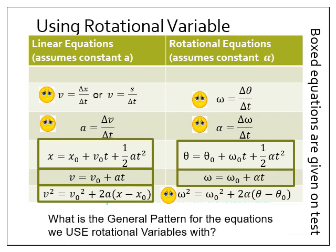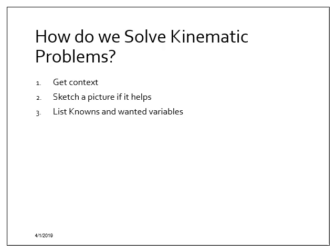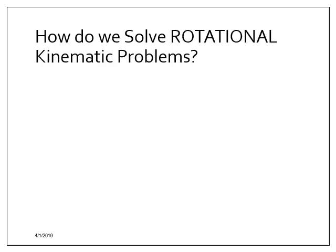Now let's review how we solve kinematic problems. I break it into six steps: first, read the question and get context — is it accelerating, slowing down, speeding up, what direction? Second, sketch a picture. Third, list your variables — both known and unknown — typically the five key ones: displacement, initial velocity, final velocity, acceleration, and time. Fourth, use those variables to pick an equation. Fifth, plug in and solve. Sixth, double-check your answer to make sure it makes sense.